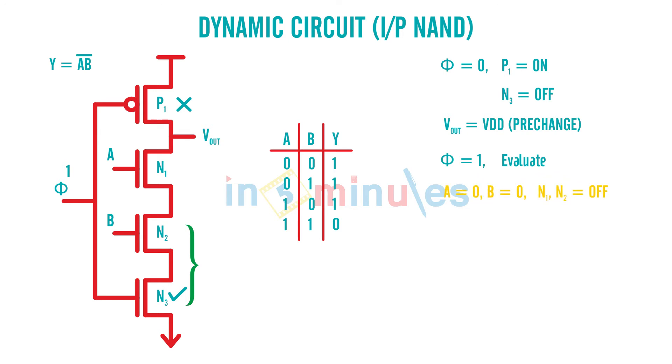If A is 0, B is 0, N1, N2 off and because both of them would be off there is no path for the initial VDD which was charged to discharge to ground so my output is going to be 0.